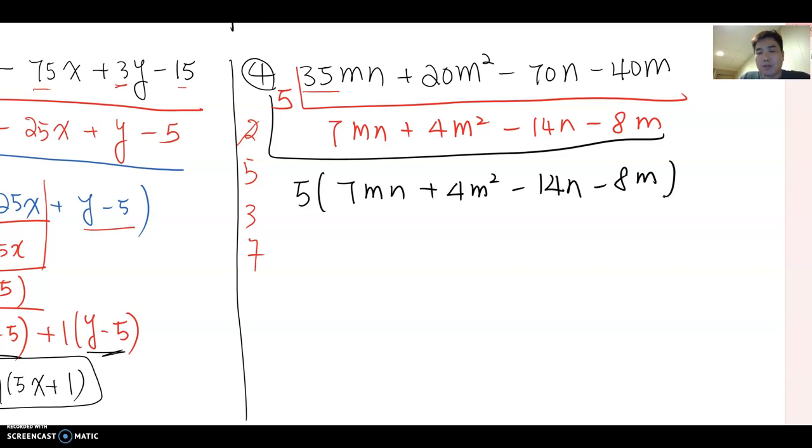But like last time, we see four terms. Four terms, we can use grouping because four terms means we can separate as a group, two terms by two terms. So we can try grouping here. I'm gonna cut half and then make 7mn plus 4m² become one group, and then 14n minus 8m become the second group.